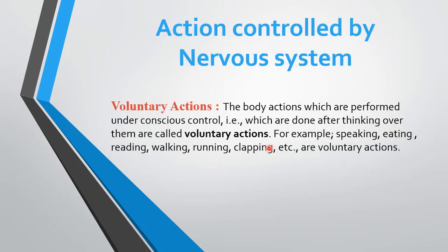Action controlled by the nervous system. First, we discuss voluntary actions. The body actions which are performed under conscious control — which are done after thinking over them — are called voluntary actions. These actions are done after thinking, under our conscious control or will.